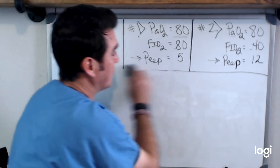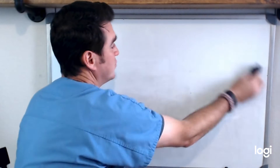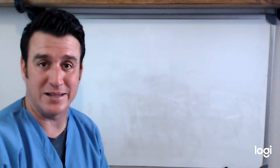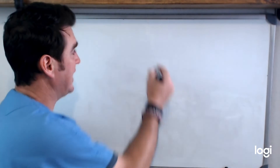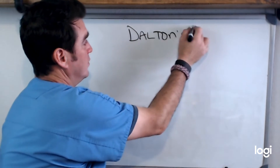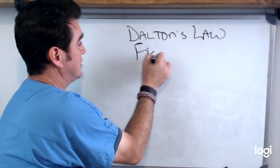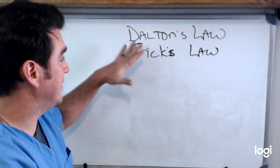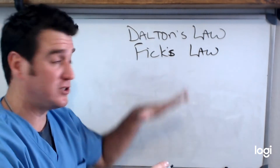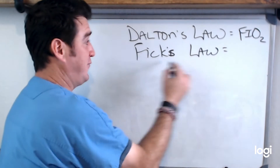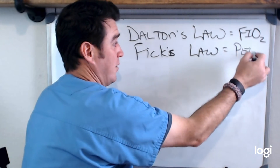I'm going to erase all of this because we're getting into more theory-based material now, not specific examples. What I want to talk about today is two things: I want to bring back Dalton's Law, which we touched on in the first video, and I want to talk about Fick's Law. When we talk about Dalton's Law, we're talking about FiO2. When we talk about Fick's Law, we're talking about PEEP.